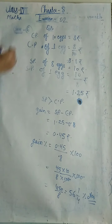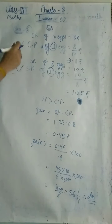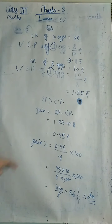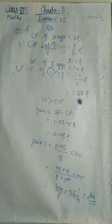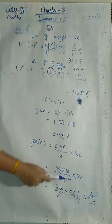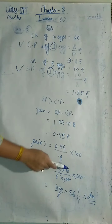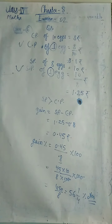SP (1.25) is greater than CP (0.8), so gain = SP − CP = 0.45 rupees. Gain percentage = (0.45 / 0.8) × 100. Solving with decimals: multiply numerator by 100 (two decimal places), denominator by 10 (one decimal place), giving 450/8 = 56¼%. Same answer — use whichever method is easier for you.